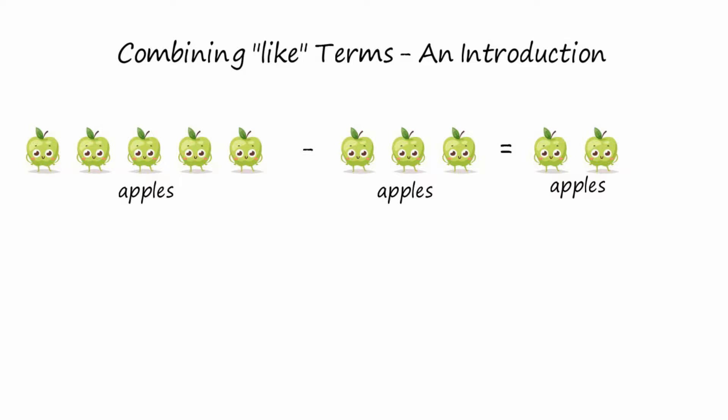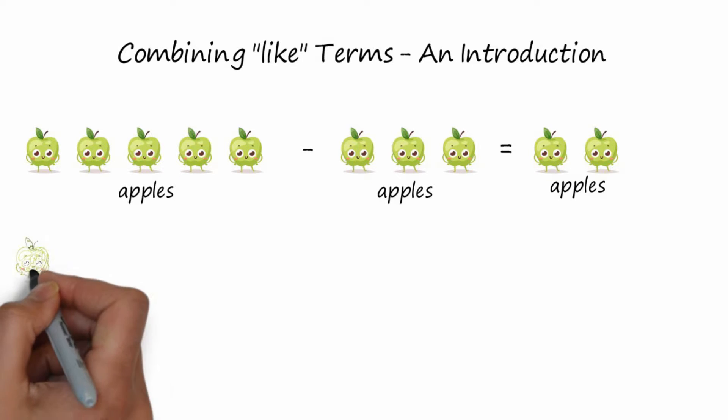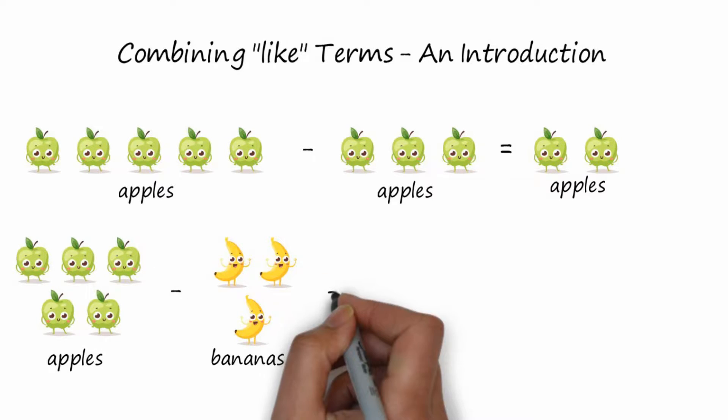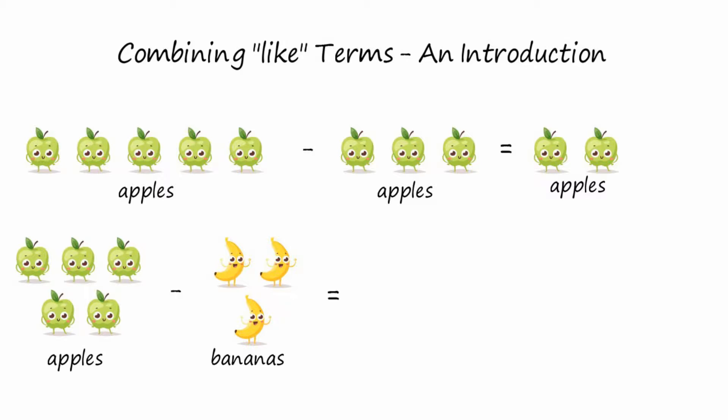Alright, let's say that we had five apples and we tried to subtract three bananas. What would we have left now? Well, we would still have our five apples and three bananas.